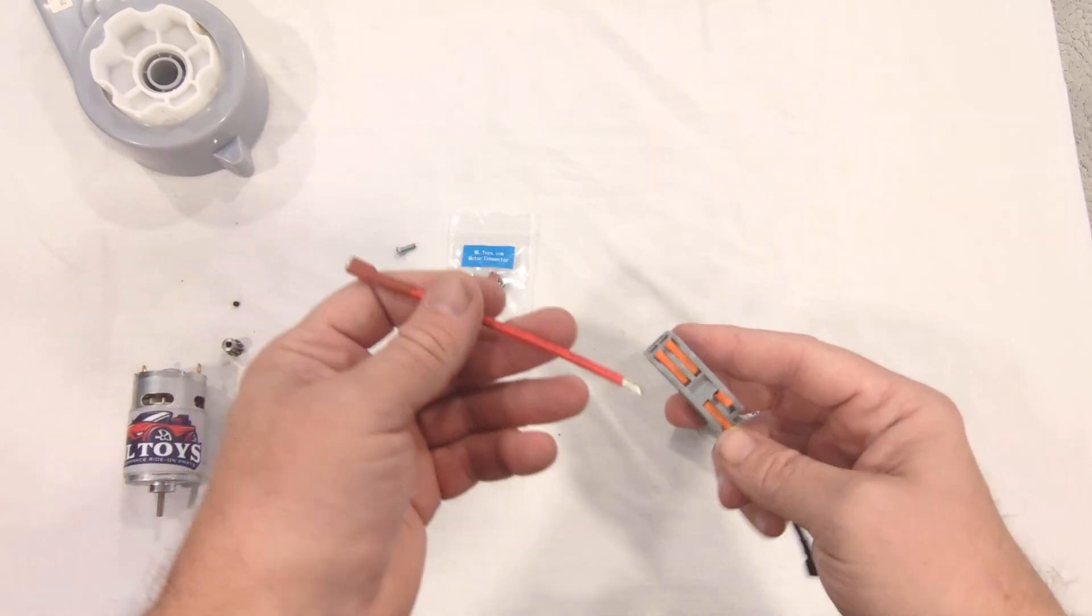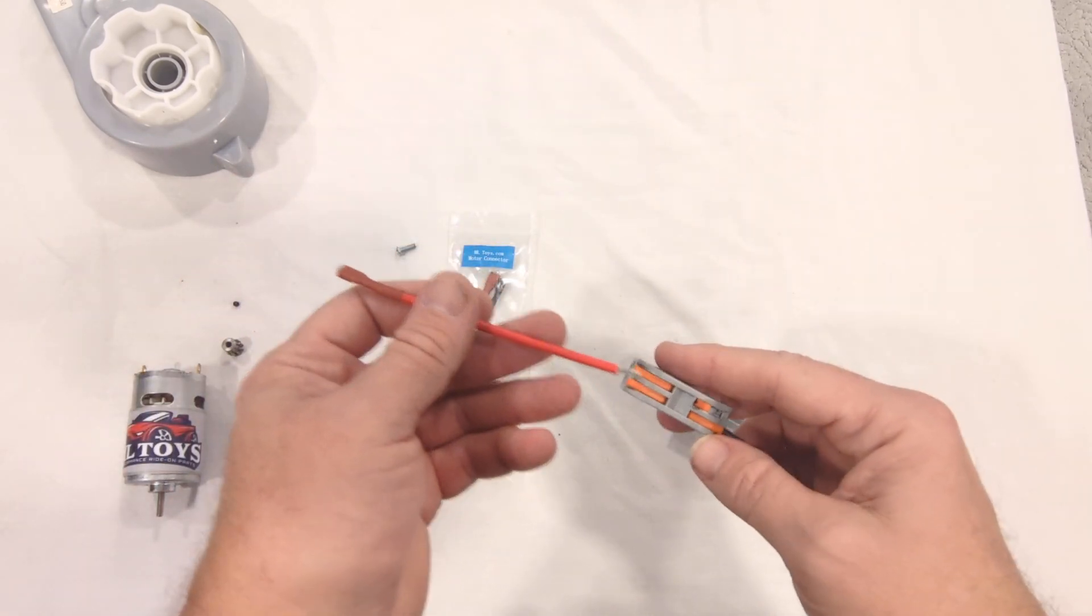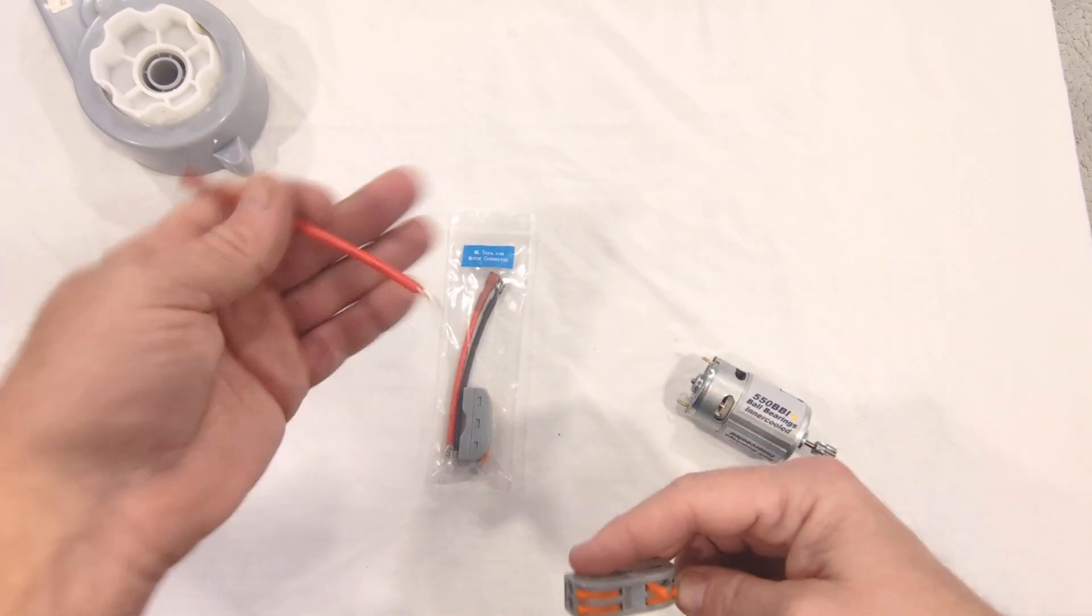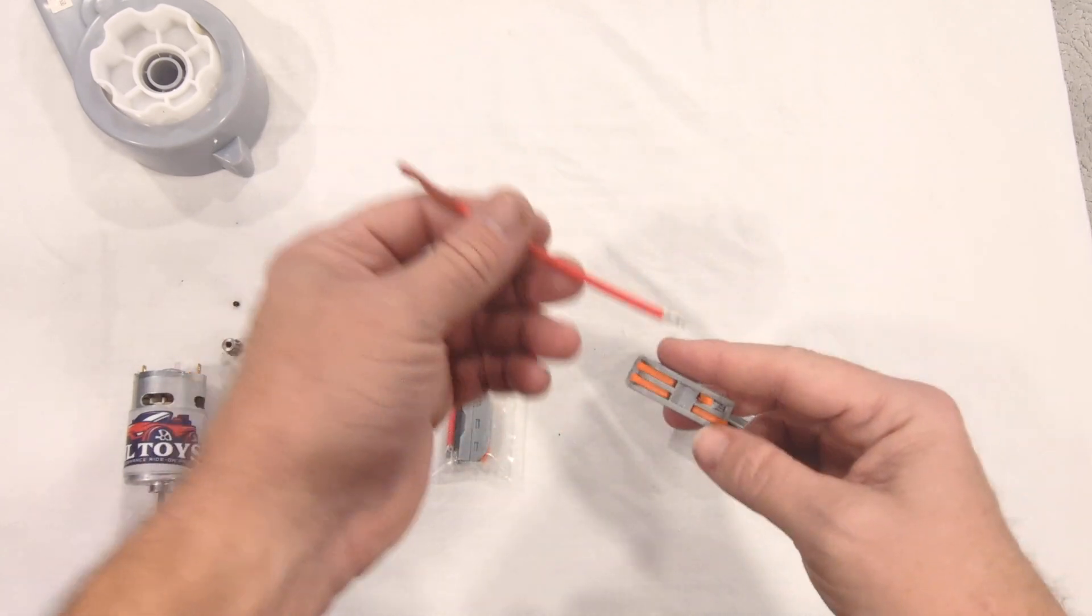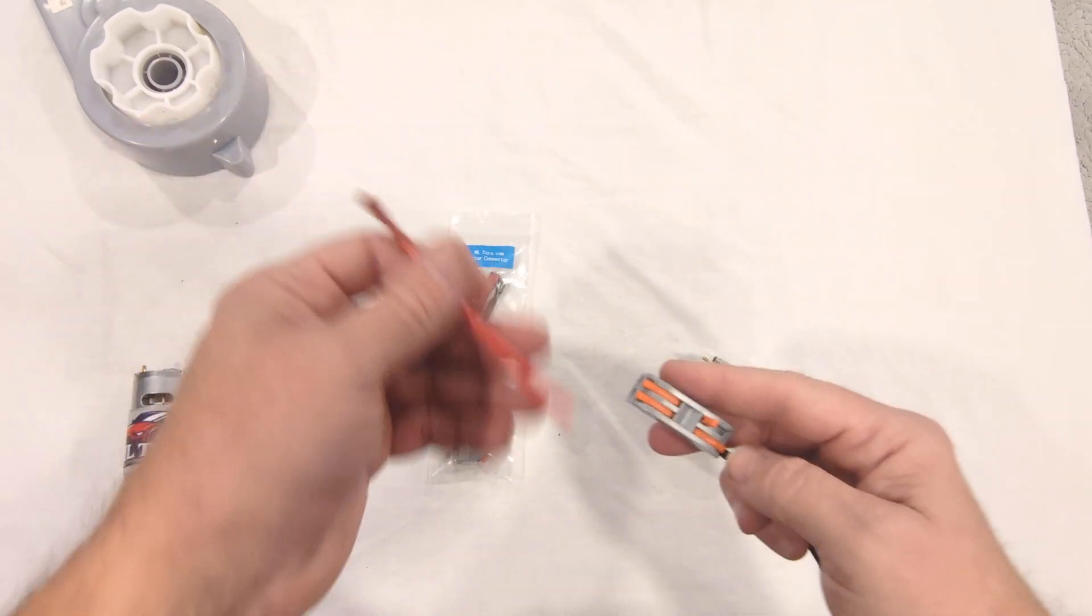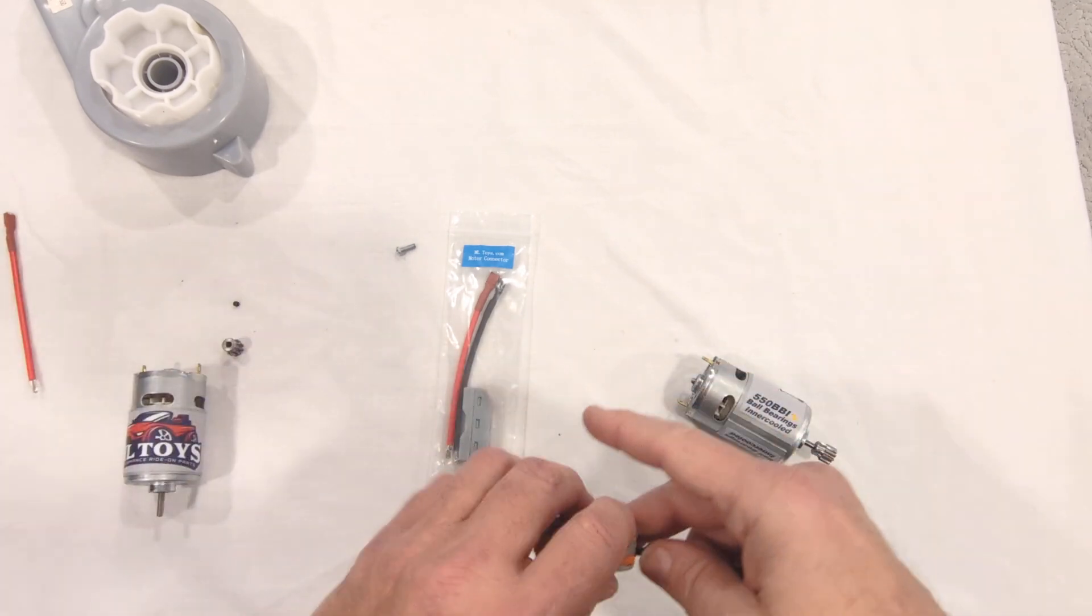If you get it wrong, this is what I was saying before about needing to switch them around. You're not going to blow anything up if you get these wrong. It's just one tire is going to go forwards, the other one's going to go backwards. So you just switch the two wires around until you get both sides going forwards when the car is in forward gears.